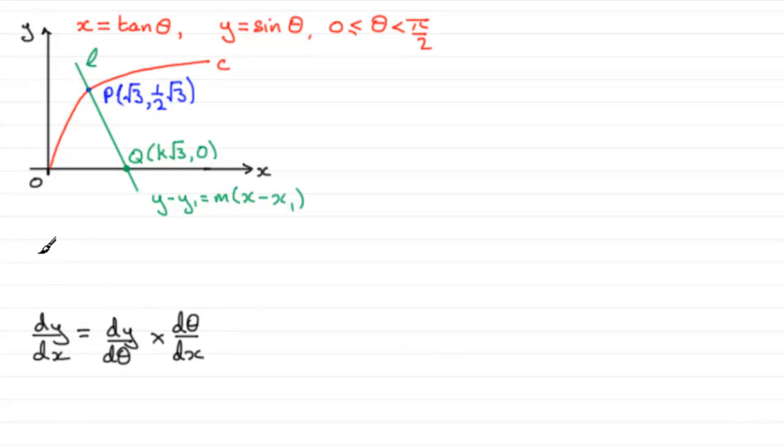So I need to work out what dy by d theta is and d theta by dx. And normally we start off by differentiating x, in this case, with respect to theta. So we know that x equals tan theta, so therefore dx by d theta equals the differential of tan theta with respect to theta, which is sec squared theta.